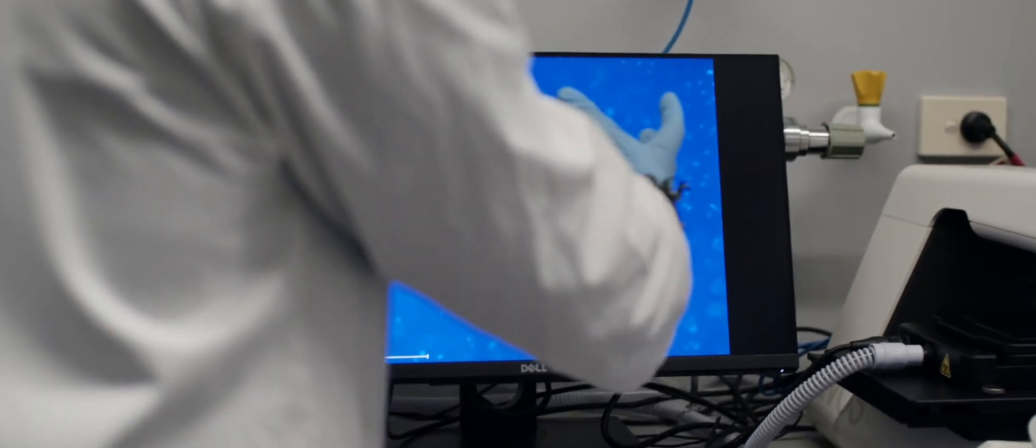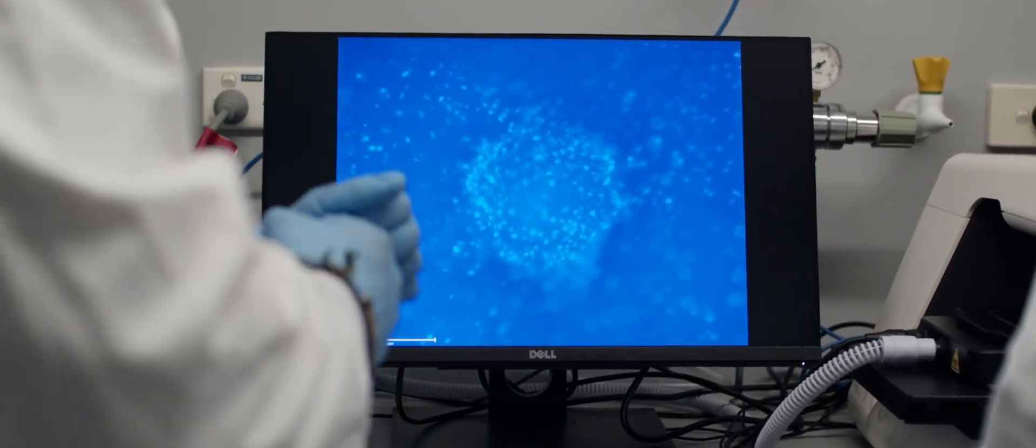This is a bioprinted mini heart. So what you're seeing is basically all these cells contracting towards the center and we use them as building blocks to 3D bioprint a cardiac patch.